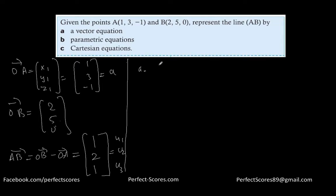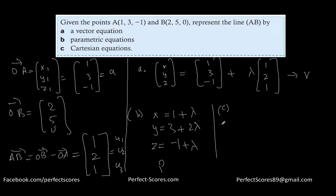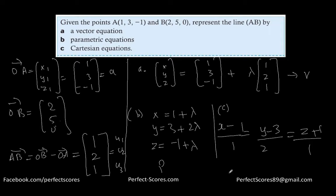The question is asking for the vector equation, parametric equation, and Cartesian equation. The vector equation is: R, that is (x, y, z), equals (1, 3, −1) plus lambda times (1, 2, 1). The parametric equations are: x equals 1 plus lambda, y equals 3 plus 2·lambda, and z equals −1 plus lambda. The Cartesian equation is (x minus 1)/1 equals (y minus 3)/2 equals (z minus (−1))/1, which is (z plus 1)/1.